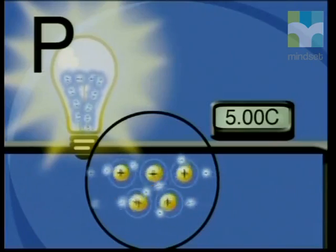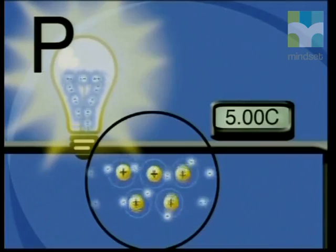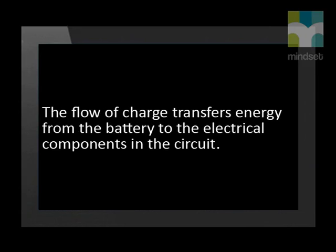Electric current passes through a conductor. The flow of charge has increased the internal energy of the light bulb. The flow of charge transfers energy to the working parts of the circuit — it acts as an agent in transferring chemical potential energy from the battery to the internal energy of the components. That is the function of electric current. The flow of charge transfers energy from the battery to the electrical components in the circuit.